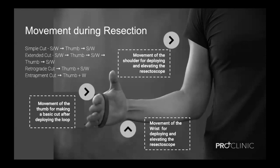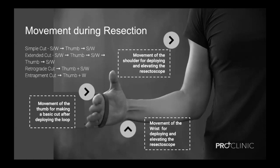Let's understand how the movements happen during resection. There are three places where movements occur: at the thumb level for the basic cut after the loop has been deployed; at the wrist level for deploying and elevating the resectoscope; and a similar movement at the shoulder level. New residents might think the movement is just at the thumb level, but actually it is a very complicated movement while taking a chip. The real message is that movement is happening both initially at the shoulder and wrist levels, and then once the loop is into the prostatic tissue the thumb lets the loop come out while cutting, and ultimately the wrist and shoulder elevate the resectoscope.